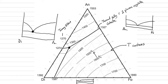At the ternary eutectic, three phases are crystallizing: anorthite, diopside, and forsterite. By adding three binary systems together, we can describe how three different mineral phases can all crystallize together. This is much more powerful than the binary, and it's a little more complicated.